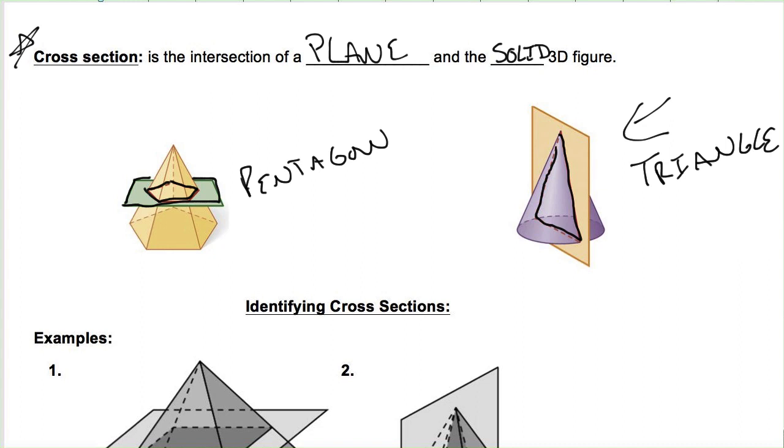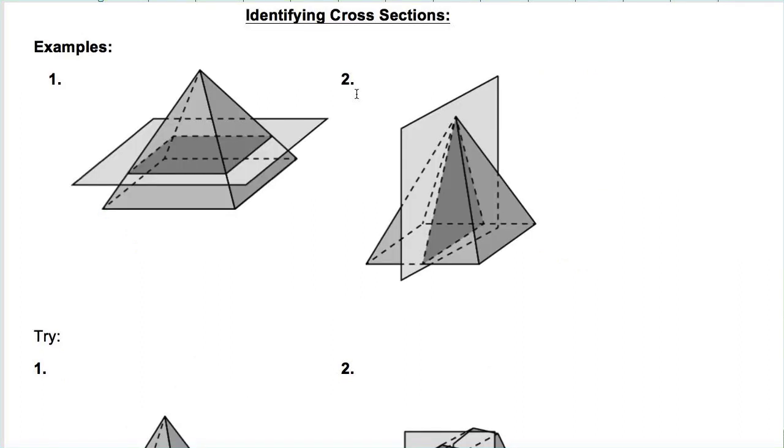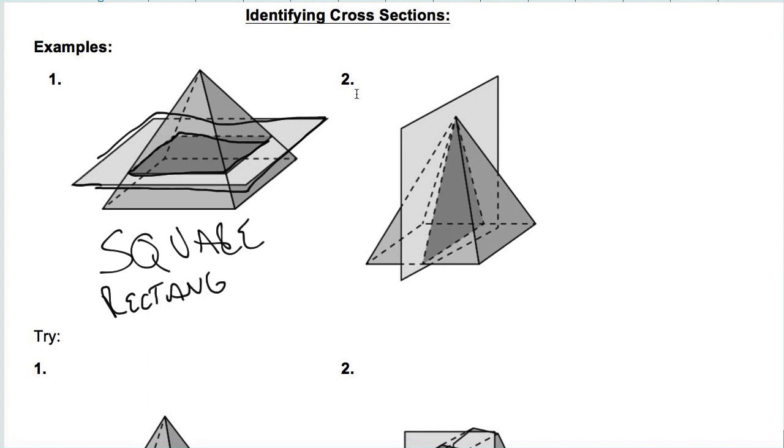Let's take a look at these few down below. So for number one, all we're doing is identifying the cross-section. So notice this cross-section, it looks like the plane is running parallel to your base. So my base is a square. So what figure shows up on the plane? It is a square. Or if you put rectangle, I would also take that.